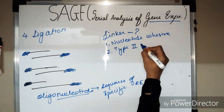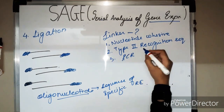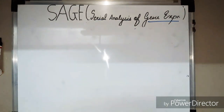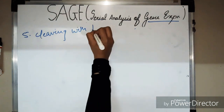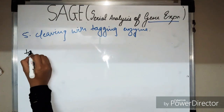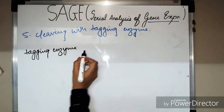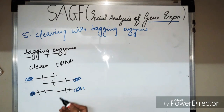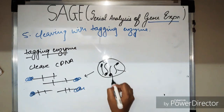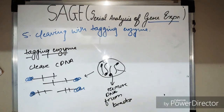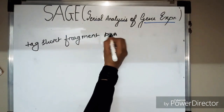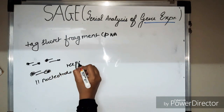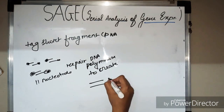The linker must contain an oligonucleotide cohesive overhang, a type II recognition sequence, and a PCR primer sequence. The fifth step is cleaving with a tagging enzyme. The tagging enzyme typically used is BsmFI, which removes the cDNA from the beads to create a short tag fragment of 11 nucleotides long. These tags have sticky ends, which are repaired using DNA polymerase Klenow fragment and dNTPs to create blunt-ended tags.